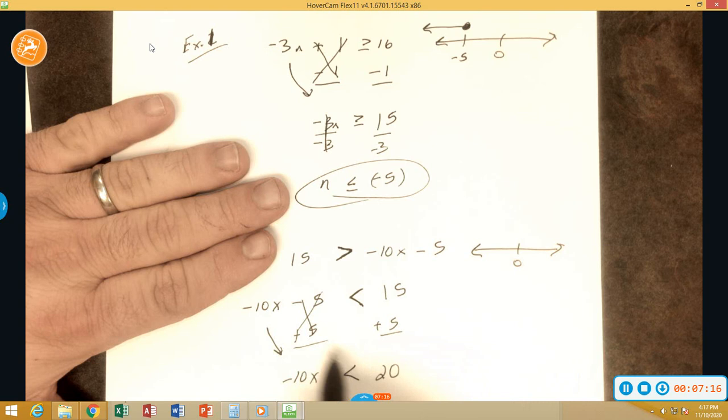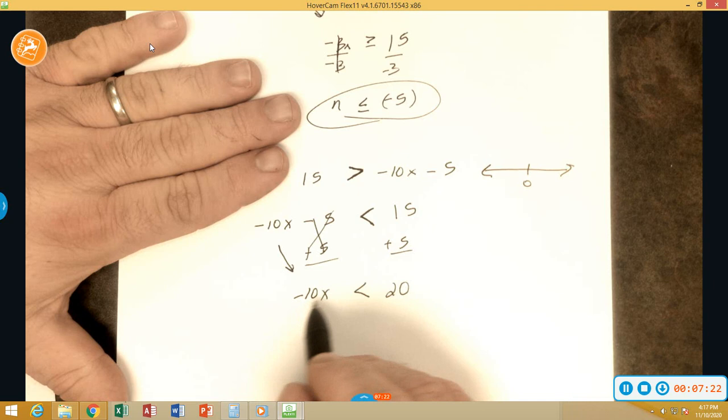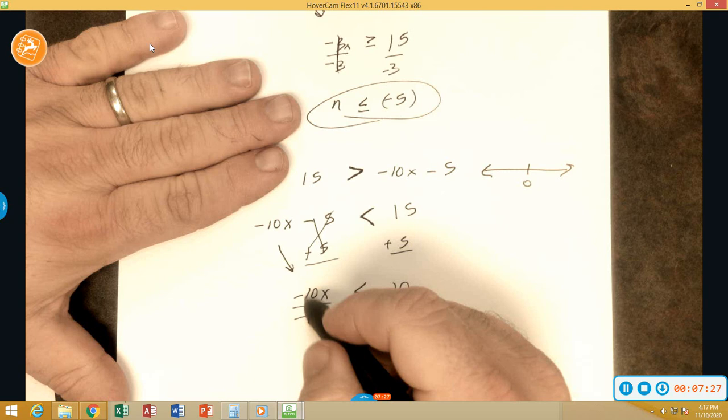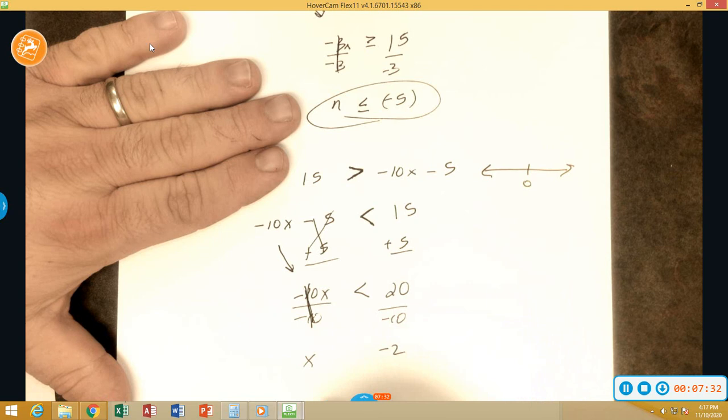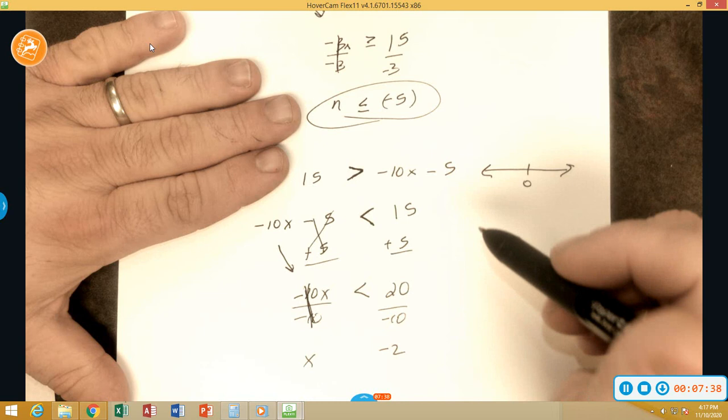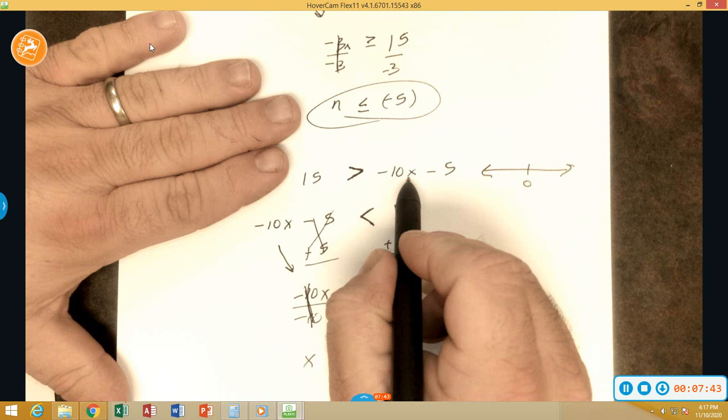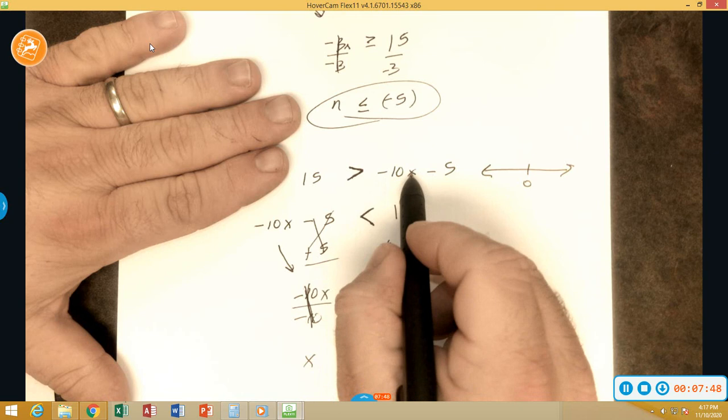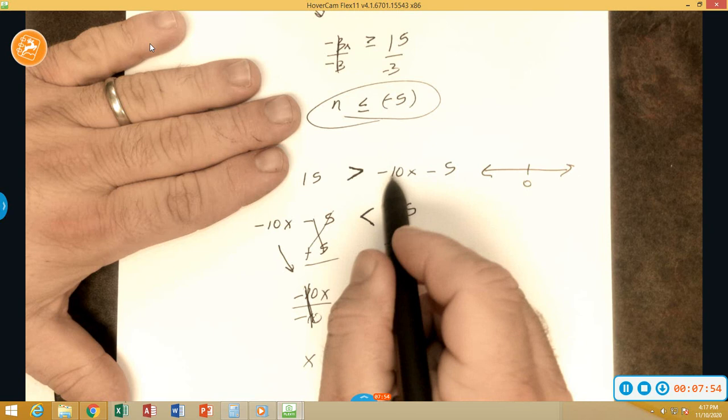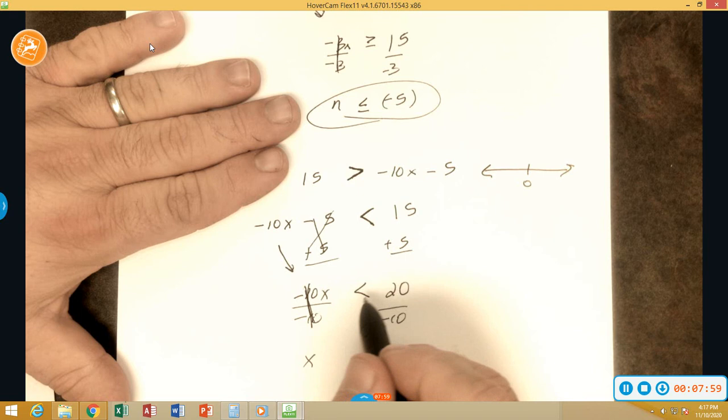Now we have to undo this multiplication by dividing. Negative 10 divided by negative 10 is a positive one. There's the big old one. 20 divided by negative 10 is negative 2. Now is the time that we ask ourselves, do I need to flip the inequality symbol? Well, is the number attached to the variable a negative?